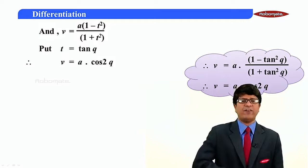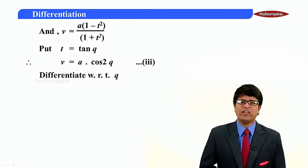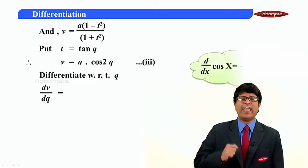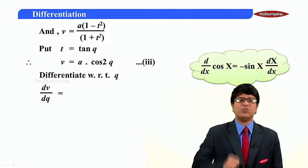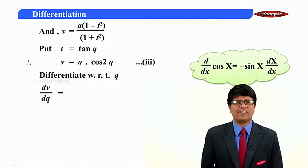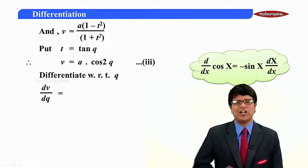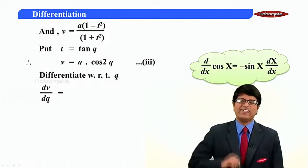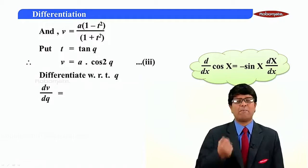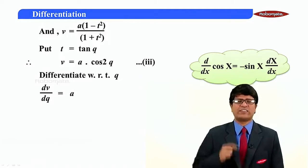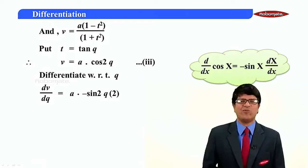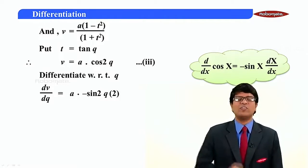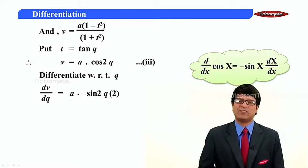If I differentiate with respect to theta, the derivative of v will be dv by d theta. a is a constant. cos 2 theta — is it a standard or a composite? I say it as composite, to which standard form cos x. Derivative of cos x is minus sin x. So here I will get minus sin 2 theta. What is replacing x? 2 theta. And the derivative of 2 theta with respect to theta is 2. So dv by d theta equals minus 2a sin 2 theta.